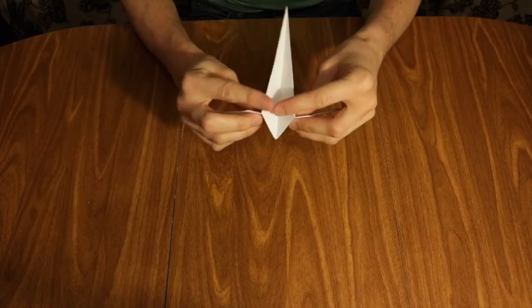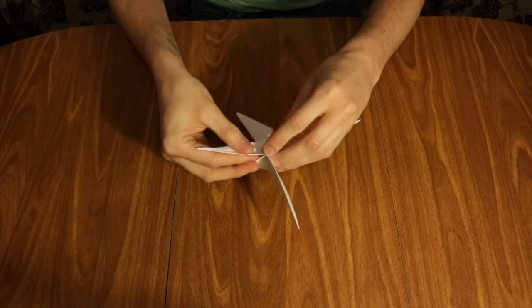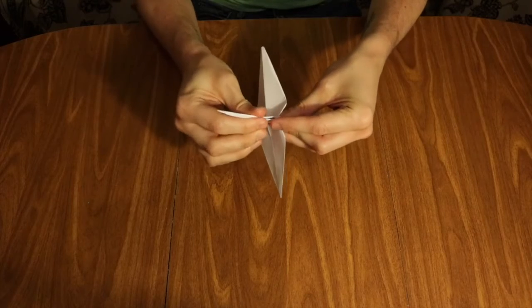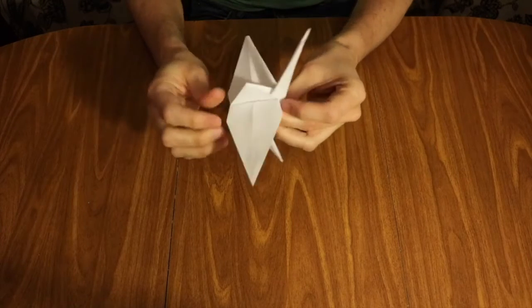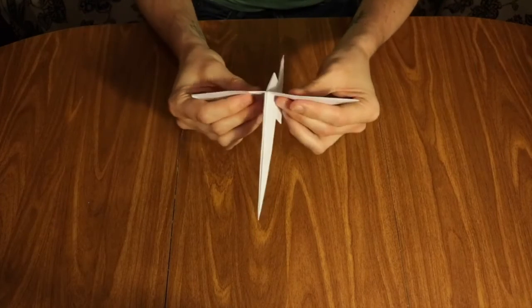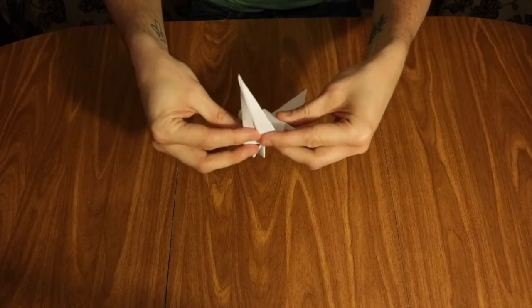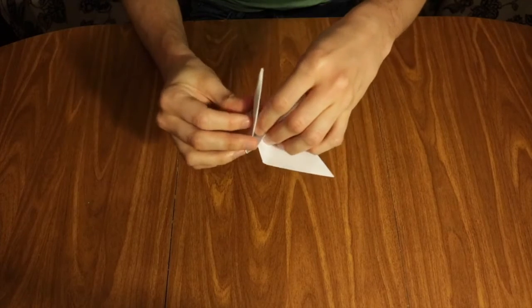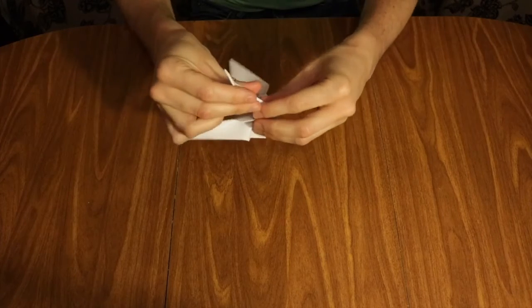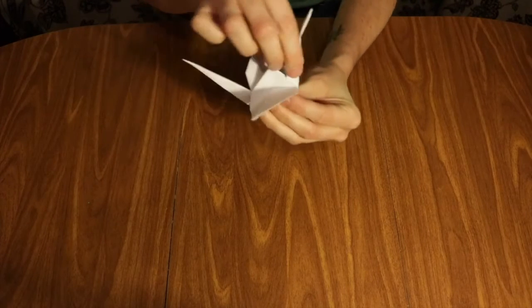Now you're going to open up this long piece and fold it upwards. So now it's going to be pointing up into the air like the long majestic neck of a crane. I'm going to do the same thing to the other side. Open it up, push the piece up into place. Look at that, starting to look like a bird.